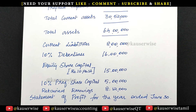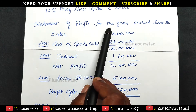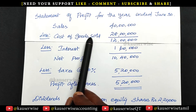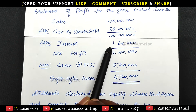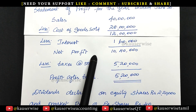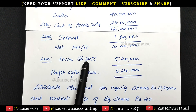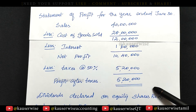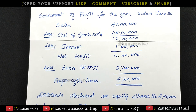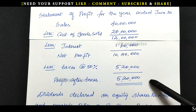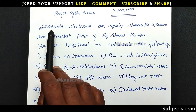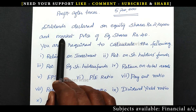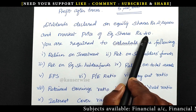Now see the income statement — statement of profit for the year ended June 30th. Sales minus cost of goods sold minus interest equals net profit. And minus taxes at 50%, you get profit after tax. They have given some information from the balance sheet as well as the income statement. The adjustments include: dividend declared on equity shares 2,20,000, and market price of equity shares rupees 40.